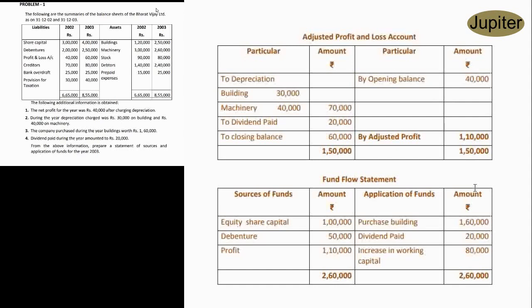We will change our working capital — this affects fund inflow or fund outflow. We will adjust the profit accordingly. To dividend paid: 20,000. We will add the dividend paid, as it is an out-of-profit payment made to shareholders.